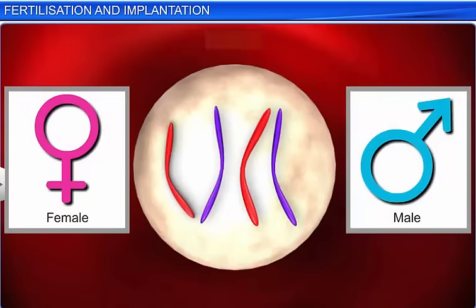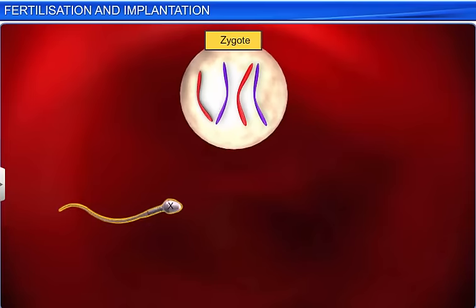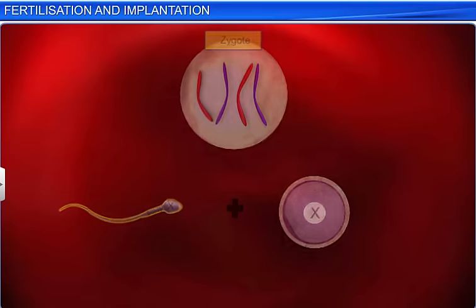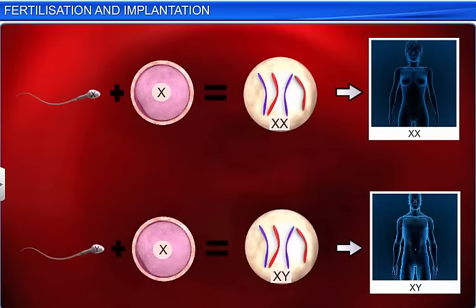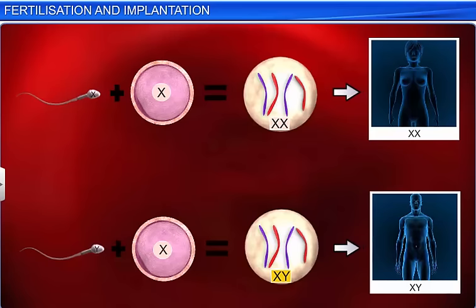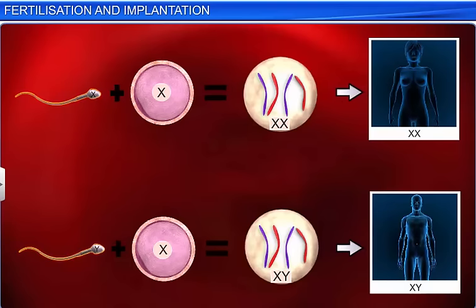Did you know that the sex of the zygote is decided at the time of fertilization? If the ovum is fertilized by a sperm containing the X chromosome, the resulting zygote contains XX chromosomes and would develop into a female. However, if a sperm containing the Y chromosome fertilizes the ovum, the resultant XY zygote develops into a male. Thus, it is the sperm that decides the sex of the fetus.